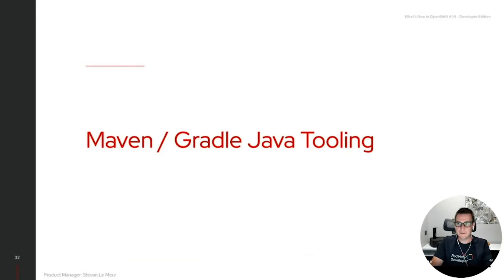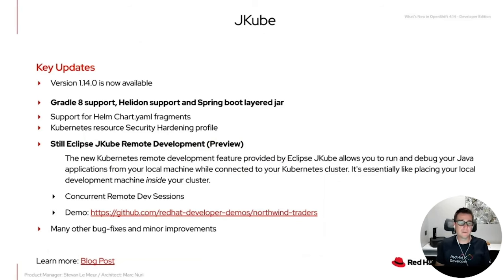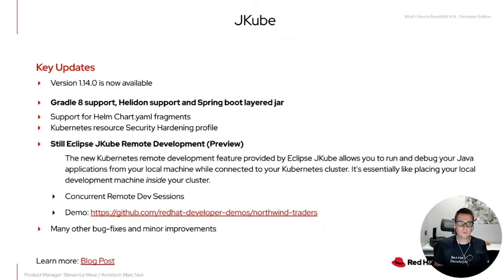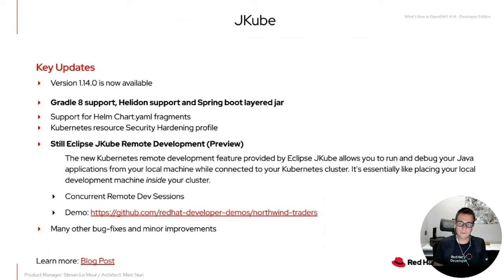JKube version 1.14 is now available. It supports Gradle 8, Elidon, and Spring Boot Layer Jar. There's also work done on improving the support of Helm charts with Helm YAML fragments. Work is ongoing on JKube remote development, which allows you to run and debug your Java application from a local machine while connected to a Kubernetes cluster. A demo is available and feedback is welcome — check out the JKube blog post to learn about all the latest release goodness.